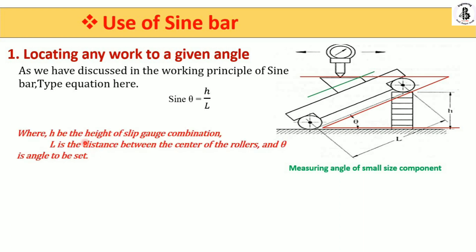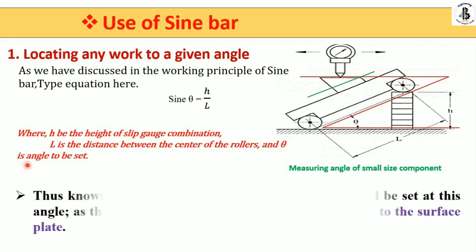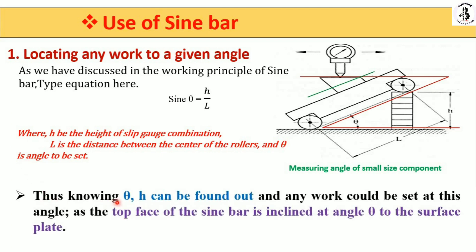Here, h is the height of the slip gauge combination, L is the distance between the centers of the rollers, and theta is the angle to be found. Knowing theta, h can be calculated, and any workpiece can be set at this angle, since the top face of the sine bar will be inclined at angle theta to the surface plate.